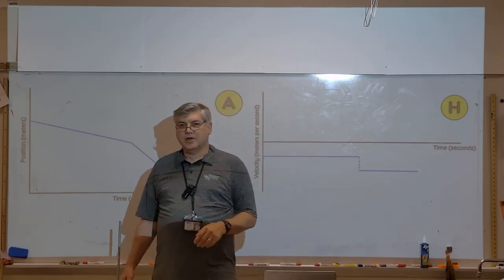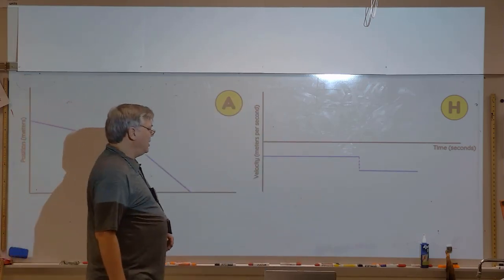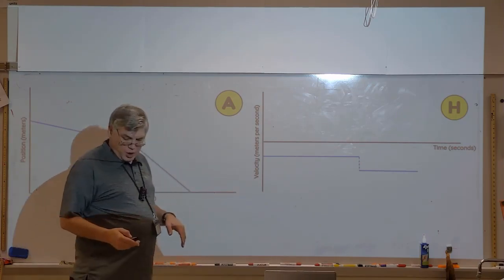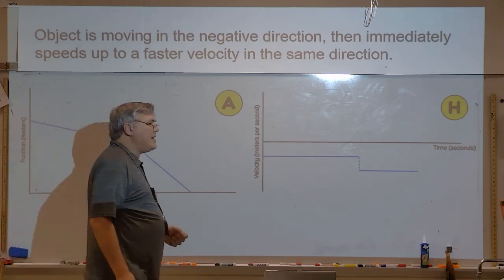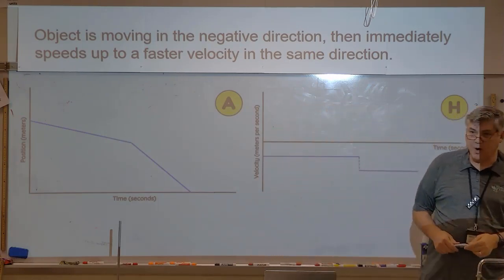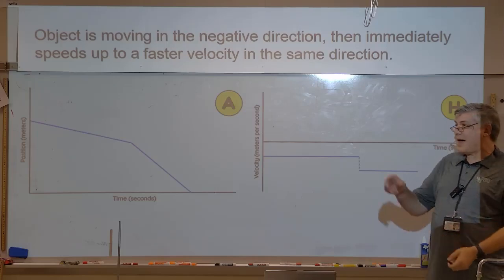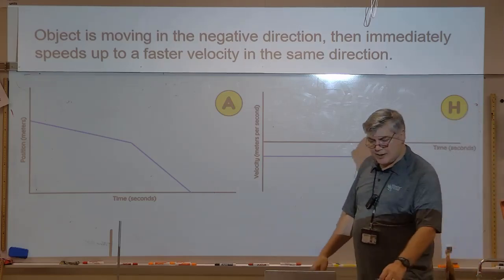So here we're going backwards and then instantly backwards faster. Transition. So sometimes you draw a straight line. I like the dotted lines. So what does this look like on your paper? An object is moving in the negative direction and then immediately speeds up to a faster velocity in the same direction.